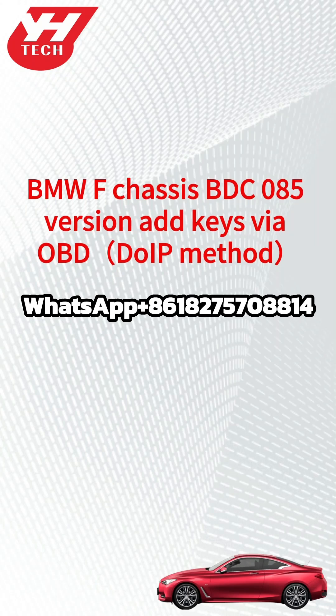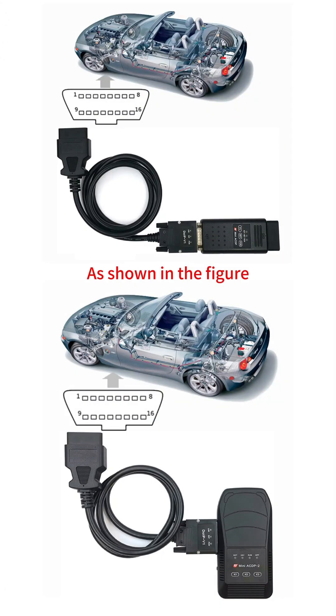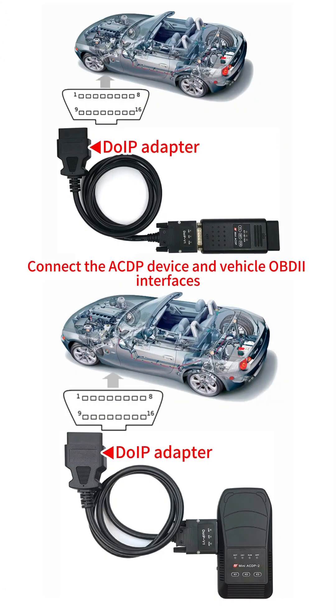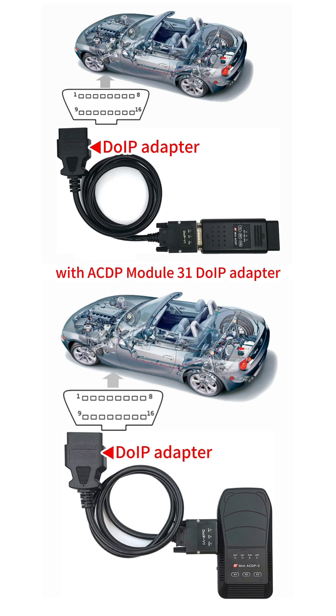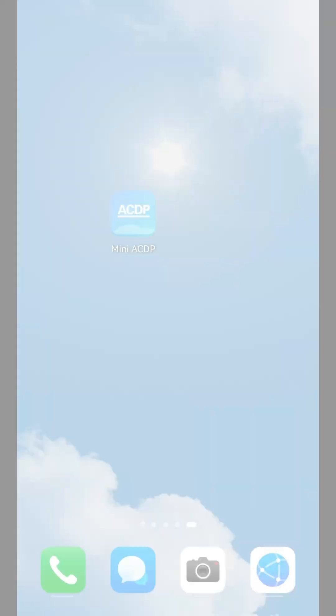This video shows how to add keys for BMW F chassis, BDC085 version, via DOIP OBD method. As shown in the figure, connect the ACDP device and vehicle OBD2 interfaces with ACDP module 31 DOIP adapter.